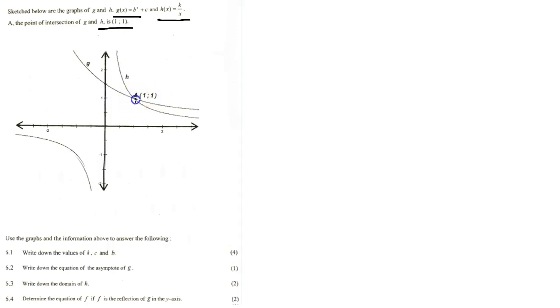The point of intersection is (1,1). So g(x) is an exponential function and h(x) is a hyperbola.